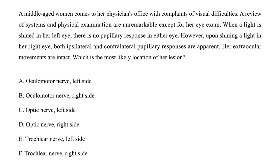Let's look at a clinical vignette. A middle-aged woman comes to her physician's office with complaints of visual difficulties. A review of systems and physical exam are unremarkable except for her eye exam. When a light is shined into her left eye, there is no pupillary response in either eye. However, upon shining a light in her right eye, both ipsilateral and contralateral pupillary responses are apparent. Her extraocular movements are intact. What is the most likely location of her lesion?